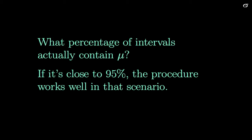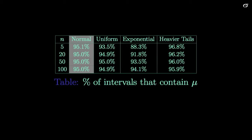First, we have the normally distributed population, so the normality assumption is perfectly justified. Theoretically, this procedure is going to work perfectly regardless of the sample size, so the true confidence level is actually 95% all the way. It shows 95.1% here, but that's just due to sampling variability, even when we draw 100,000 samples.